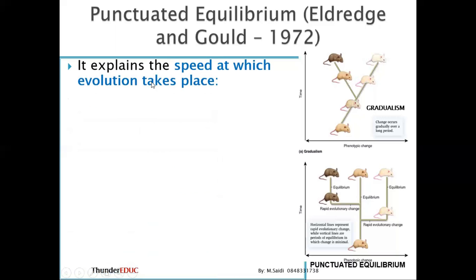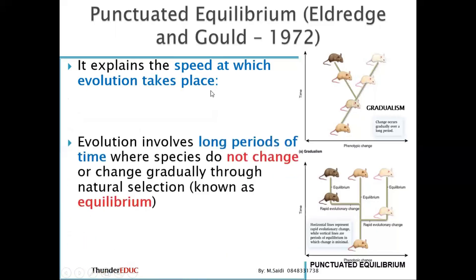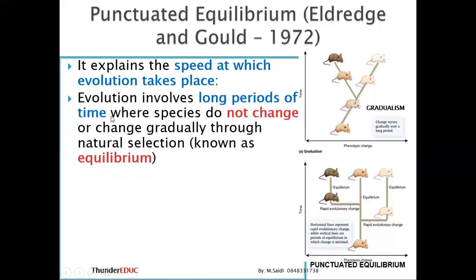Punctuated equilibrium explains the speed at which evolution takes place. Evolution involves long periods of time where the species does not change, or changes gradually through natural selection — this is known as equilibrium. Looking at the diagram, this period of no change or gradual change through natural selection is what we call equilibrium.